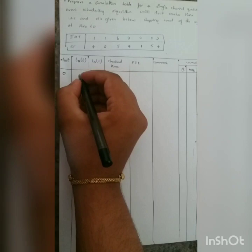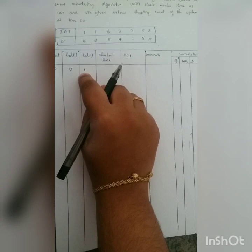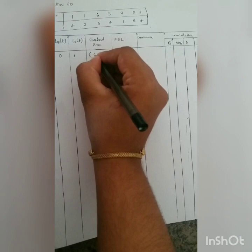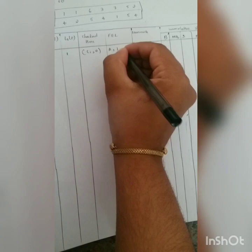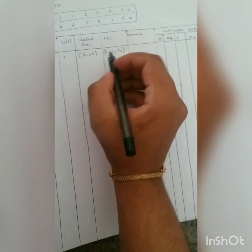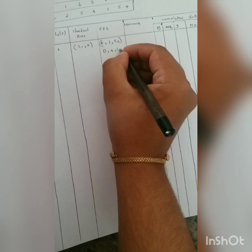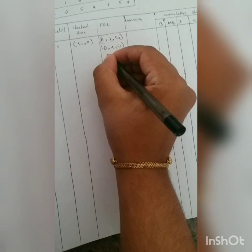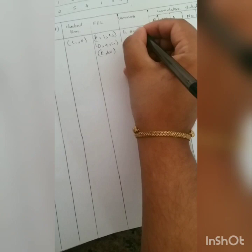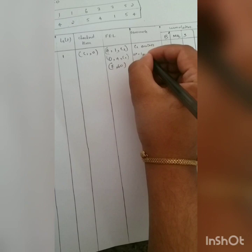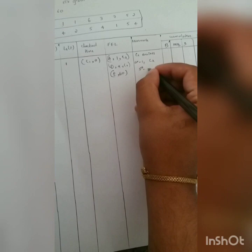At clock time 0, no events are waiting in the queue and one event is given service. The checkout time is C1, 0. The future event list includes: arrival of C1, arrival of C2 at time 1 (inter-arrival time is 1), departure of C1 at time 4 (4 + 0 = 4), and exit time at 60. Comment: C1 arrives. A* = 5 for C2 arrival, S* = 4 for C1 departure. All cumulative statistics are initialized to 0.